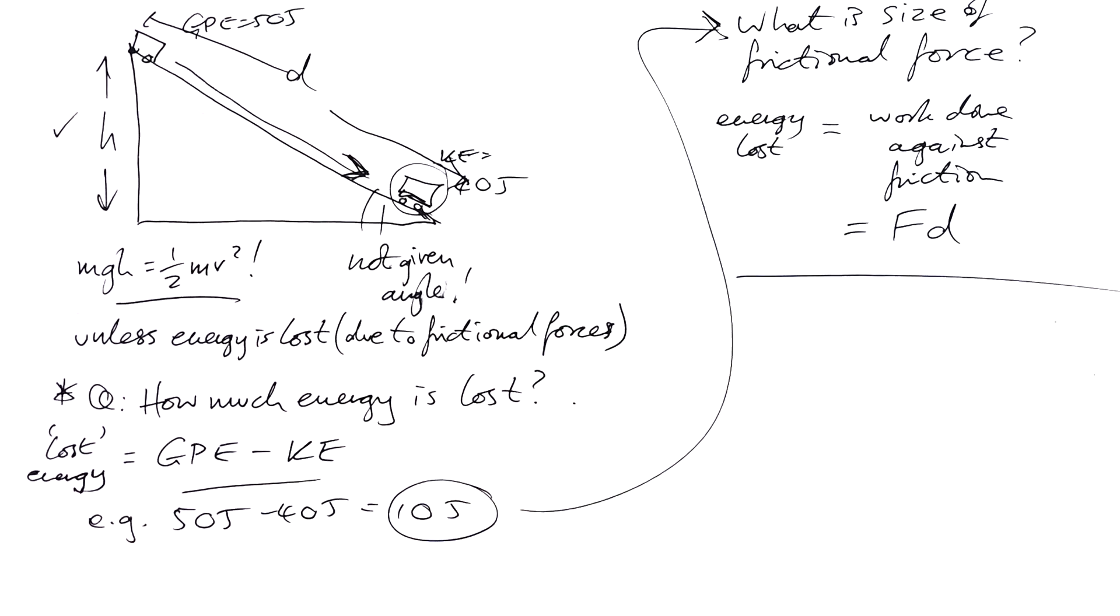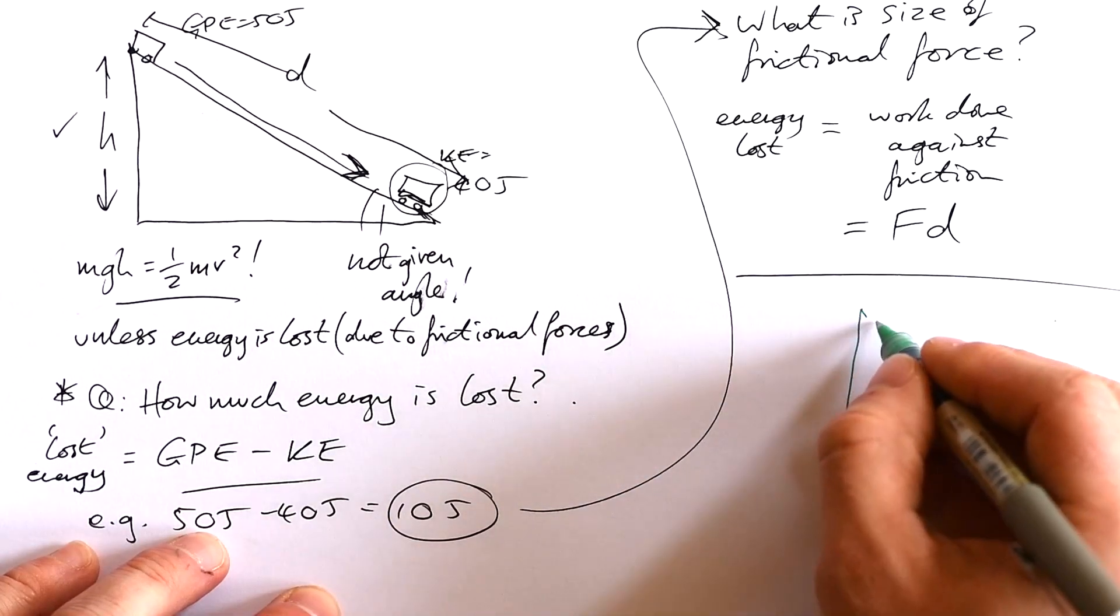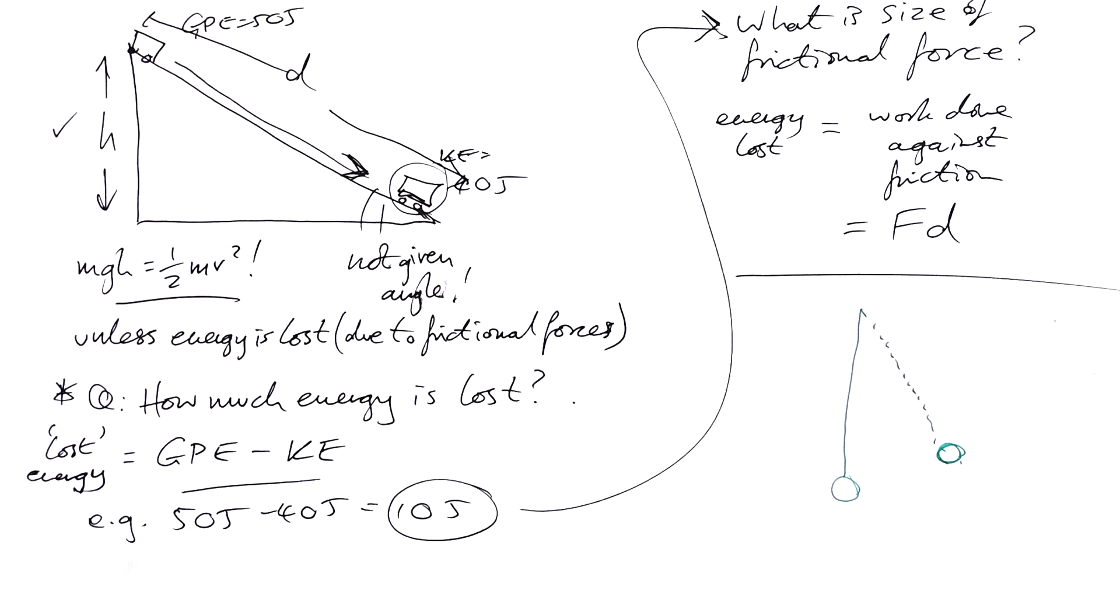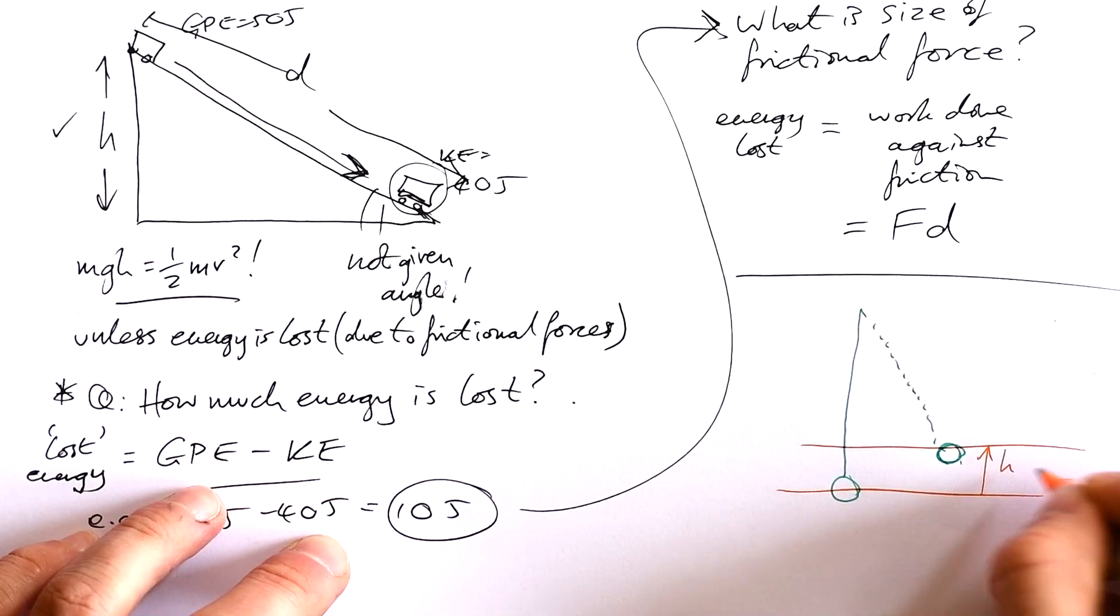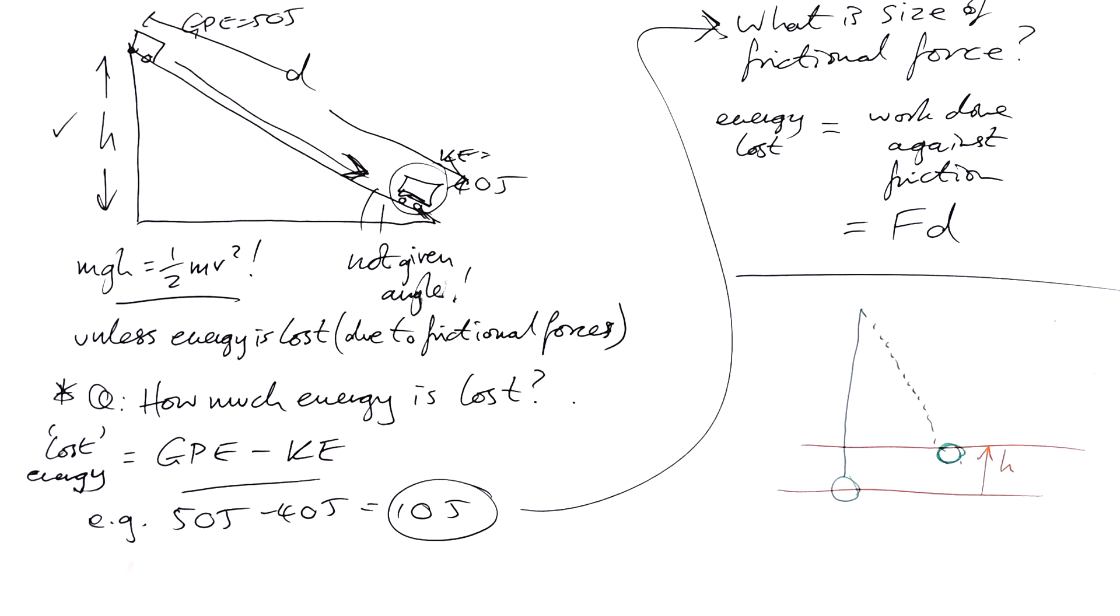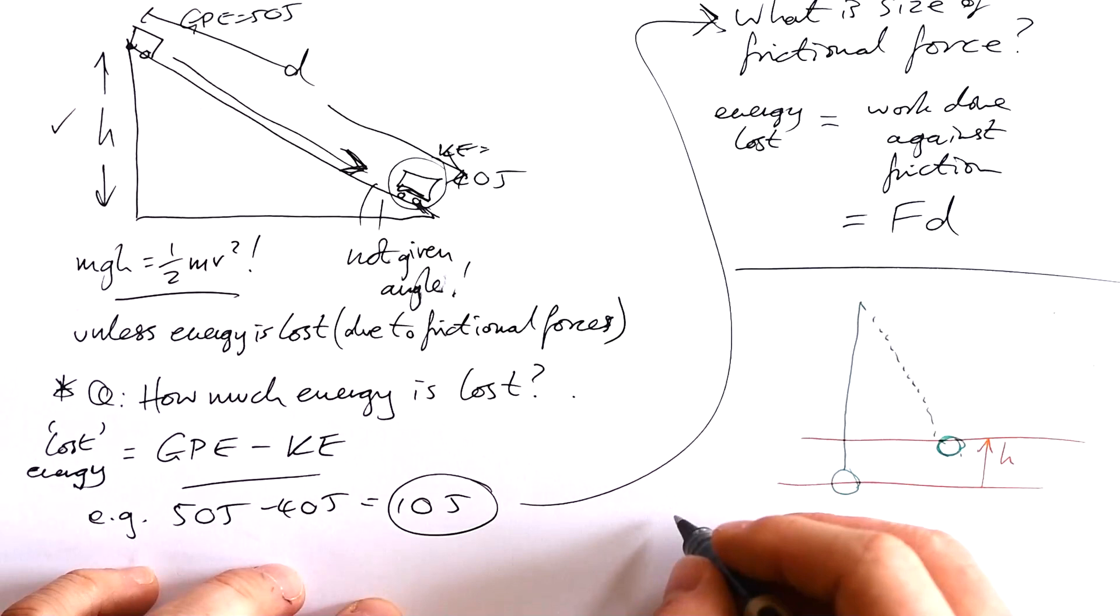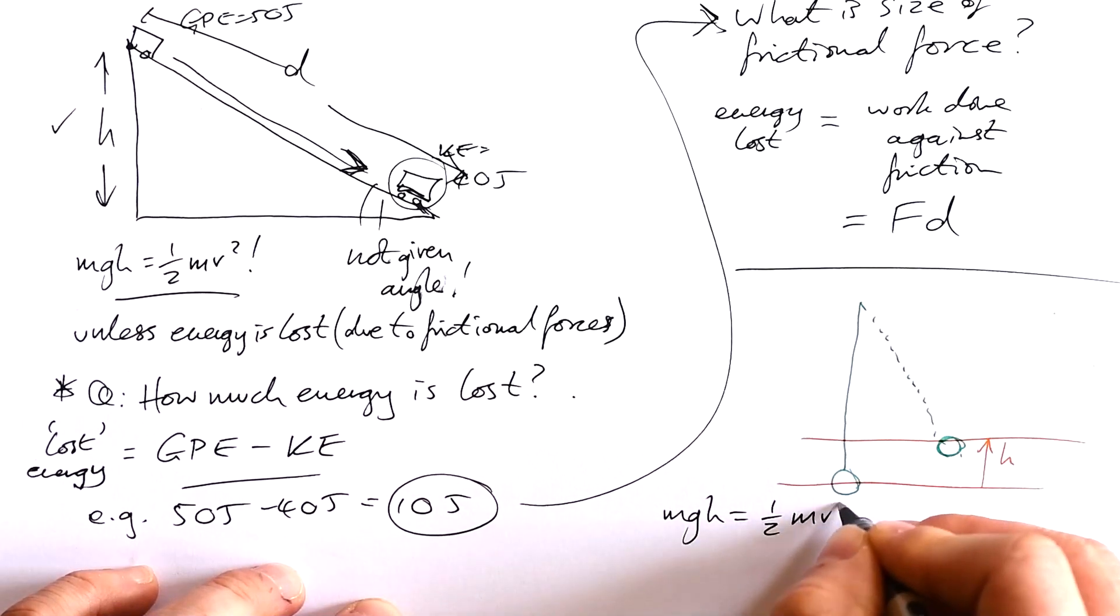One more for A-level people. This is a classic one. If you give it a pendulum and we're not told how far it swings, all we're told is how much higher the pendulum is at amplitude compared to at equilibrium. Again, we know we're going to have to use MGH equals half MV squared, and then we find V.